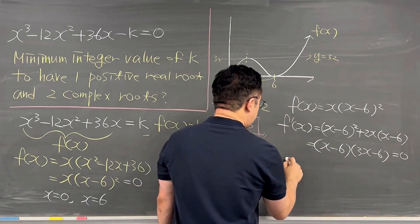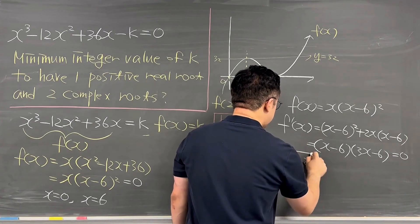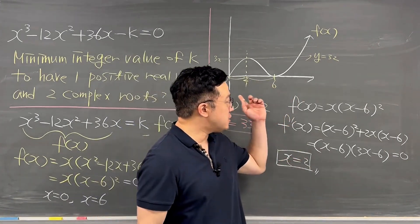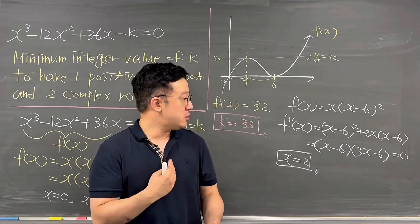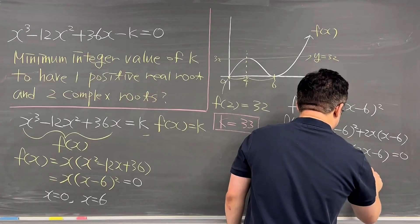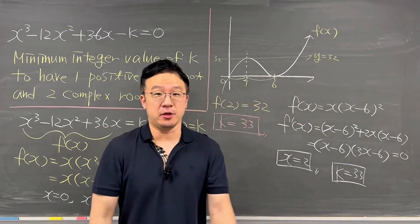So we can easily check that if x is equal to 2, it is going to be the local maximum. So you can plug in 2 to the x to get the value of the y as 32, so that you can say your k has to be 33 as the minimum integer value.